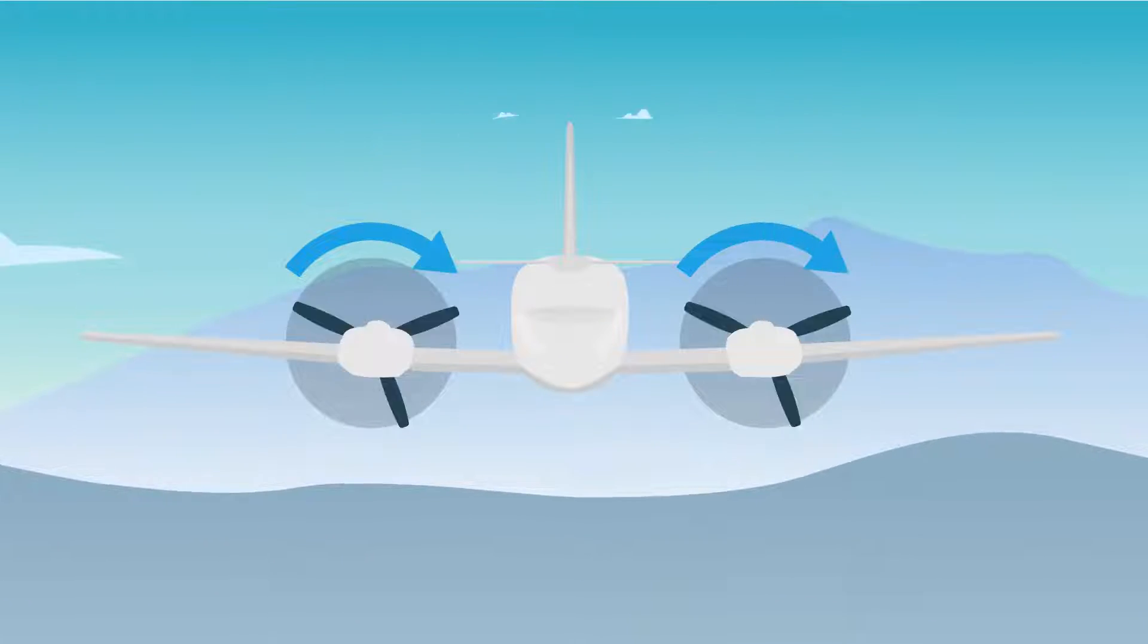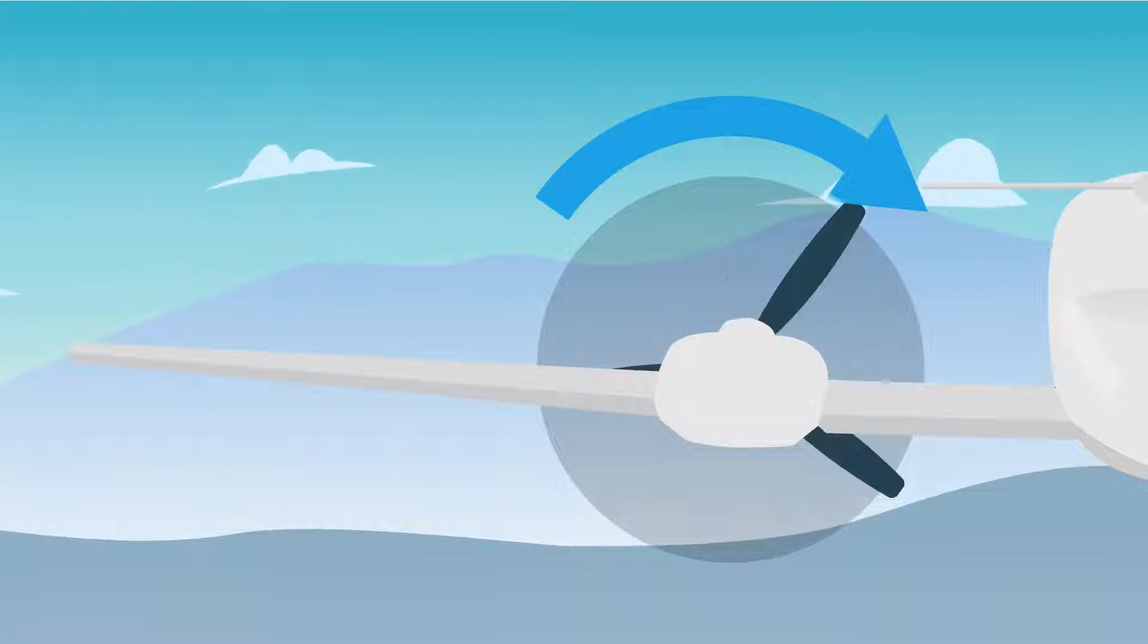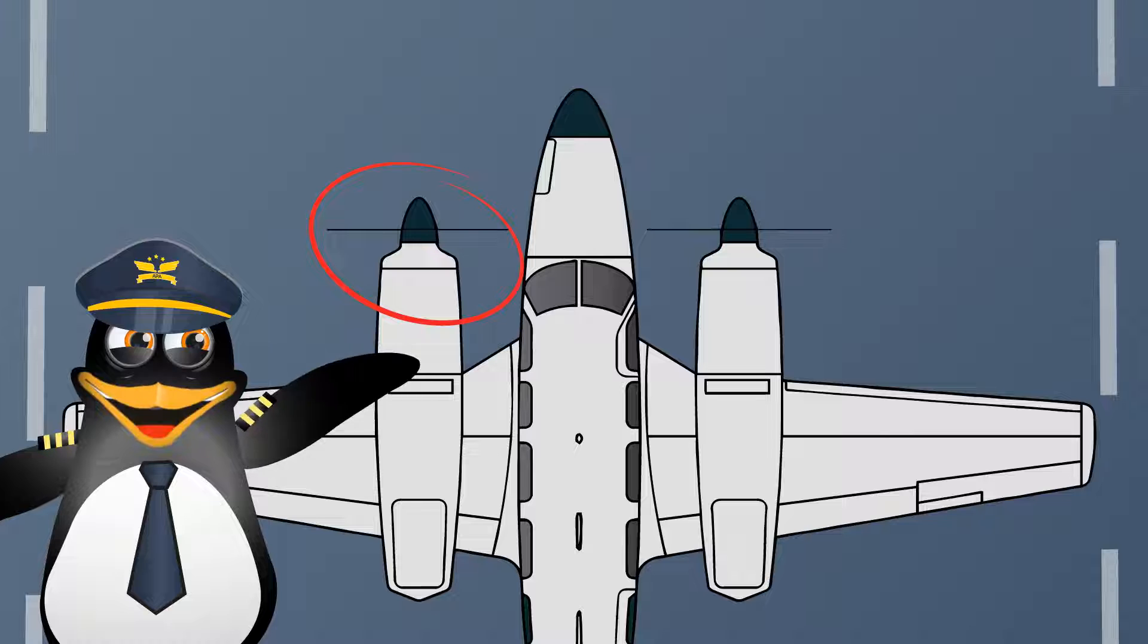For most U.S. certified twin-engine aircraft, both propellers turn clockwise when viewed from the rear of the plane. In these conventional twins, the left engine is the critical engine for four reasons.